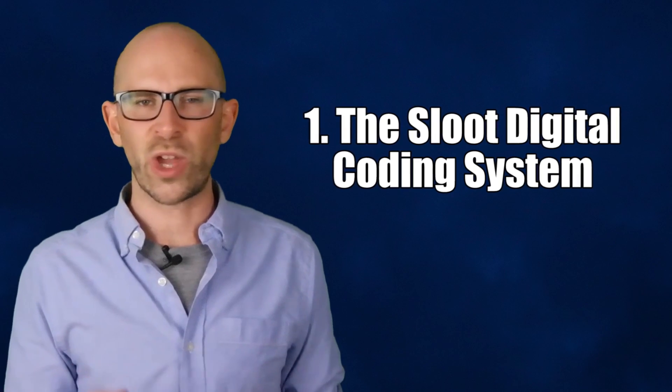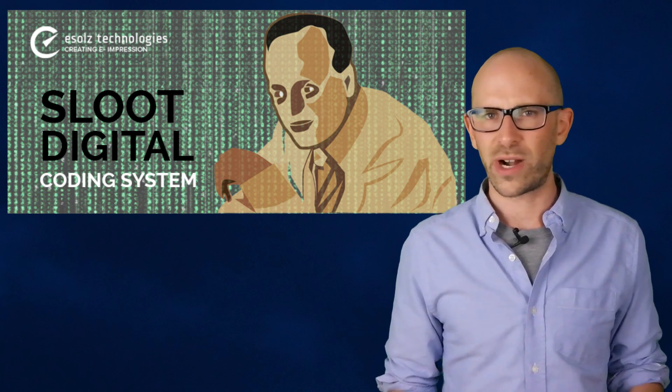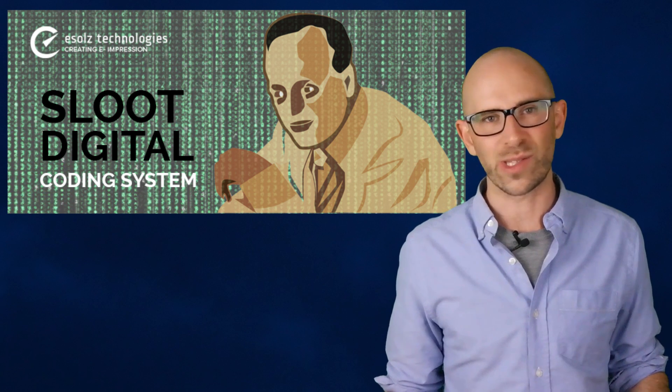The Sloot Digital Coding System. In the early 1990s, Sloot came up with a revolutionary data compression technique that claimed to compress a 10GB movie down to just 8KB without any loss of quality.